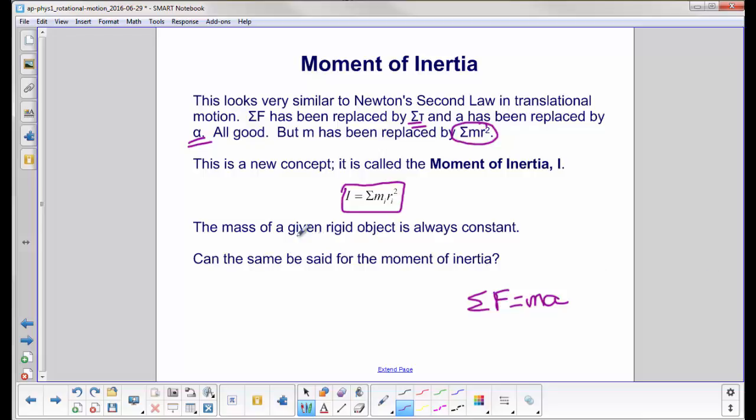Given that, we know that the mass of a given rigid object is always constant. Can the same be said for the moment of inertia?